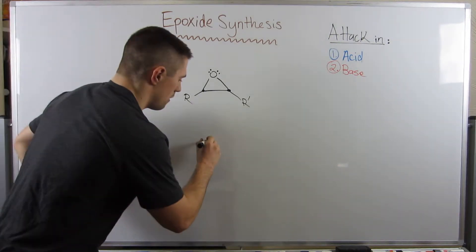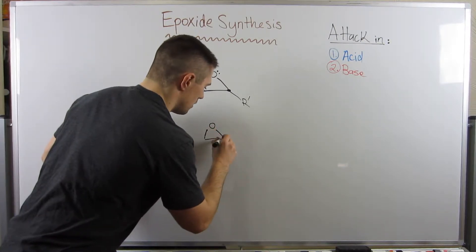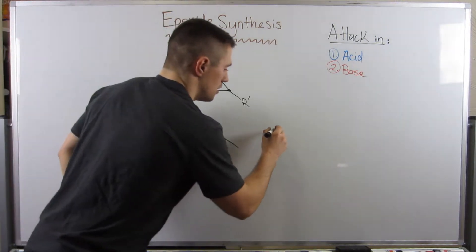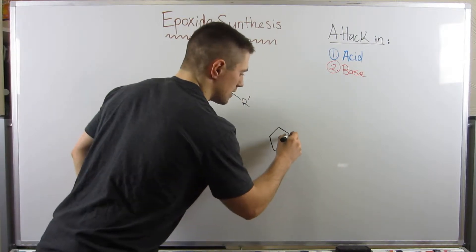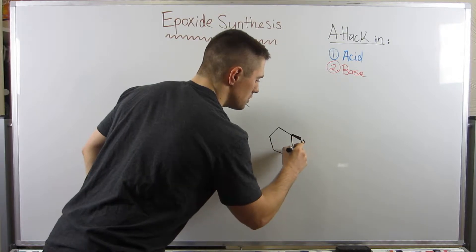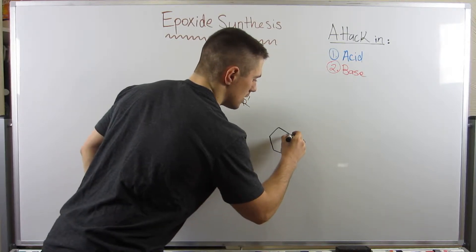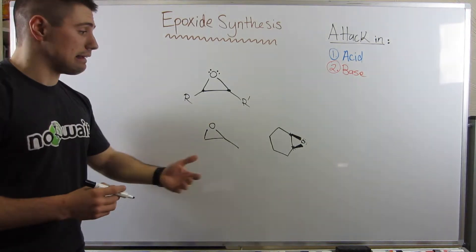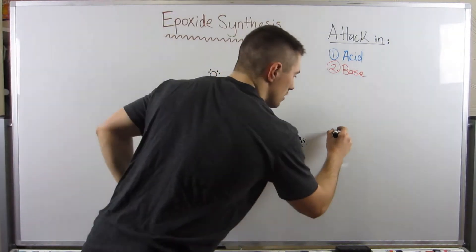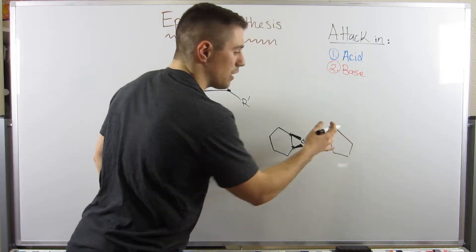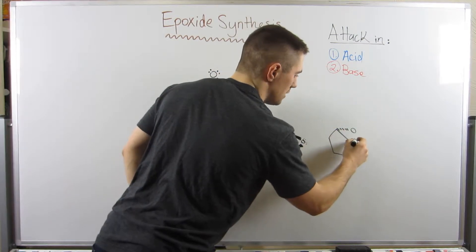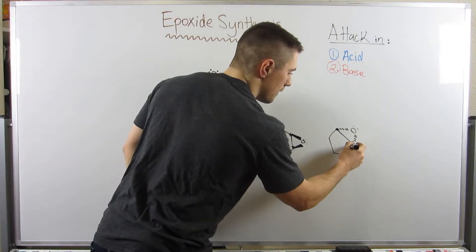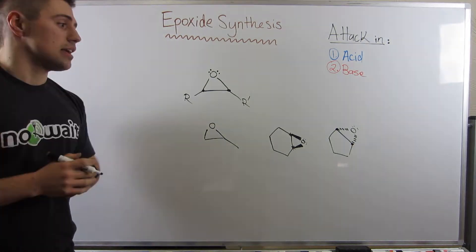Let me draw you some examples. This would be an epoxide - a one, two, three carbon epoxide. You can have epoxides with stereochemistry. Here's an epoxide with a cyclohexane ring - we could do it with two wedges. You can see the epoxide system: this carbon, this carbon, and the oxygen that makes it a cyclic ether. Another example with a five-membered ring: again, a three-atom cyclic ether, carbon here, carbon there, and the oxygen that bridges the gap.